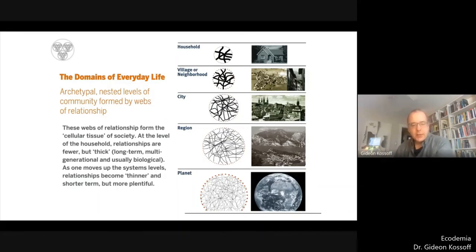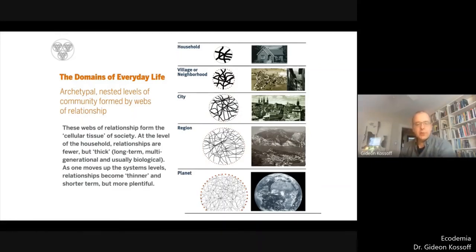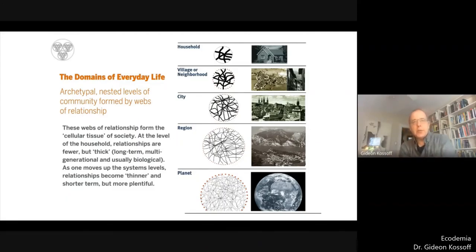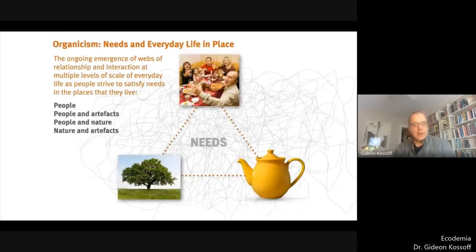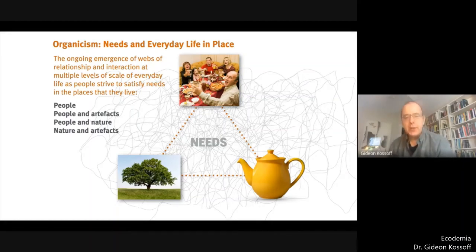This nested organic pattern represents the basic and more or less universal structure of everyday life in traditional societies. The nature of the relationships, and therefore the nature of everyday life, shifts from level to level in the move from household through to village, city and region. Relationships become looser and more transient, but more diverse and multiple. This gave everyday life at each level of scale in traditional societies its particular flavour — everyday life at the level of the village was very different from everyday life at the level of the city, with each level of scale representing a different kind of community. These complex networks of everyday life come into being at each level of scale as people go about their everyday lives, satisfying their material and non-material needs.